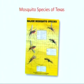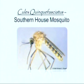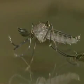Let's get acquainted with the carrier. There are approximately 85 different species of mosquitoes in the state of Texas. The most common carrier of the West Nile virus is the Culex quinquefasciatus, also known as the southern house mosquito.